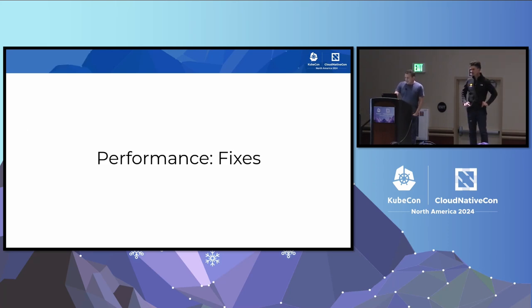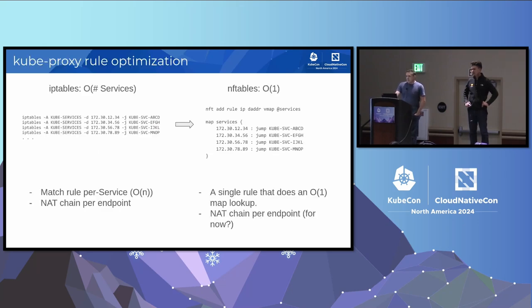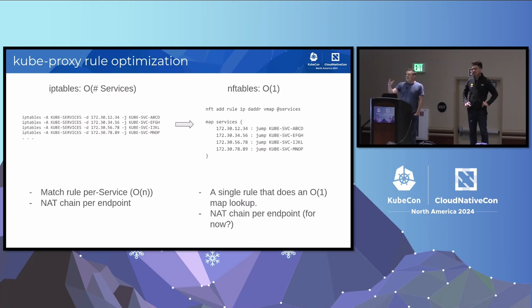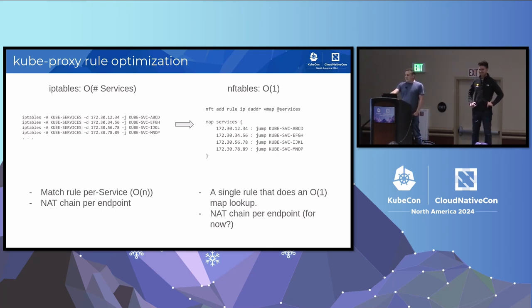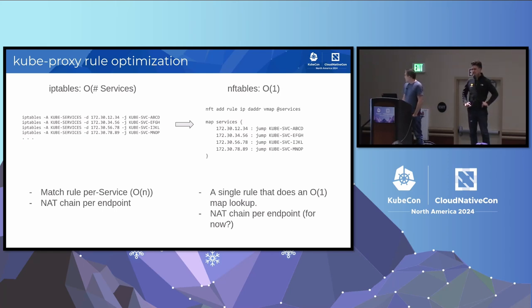To improve performance in the nftables KubeProxy and Calico, here's what we did. In iptables, we have a separate rule for each service — if the destination IP is this, go to this chain — and within each chain there are multiple rules for each endpoint. This really adds up: if you have 30,000 services, you're going to have more than 100,000 iptables rules. In nftables, we have one rule: if the destination IP is in the services vmap, apply the verdict from that map. We just have a map with one entry per service, so the map lookup is very fast and everything is faster.